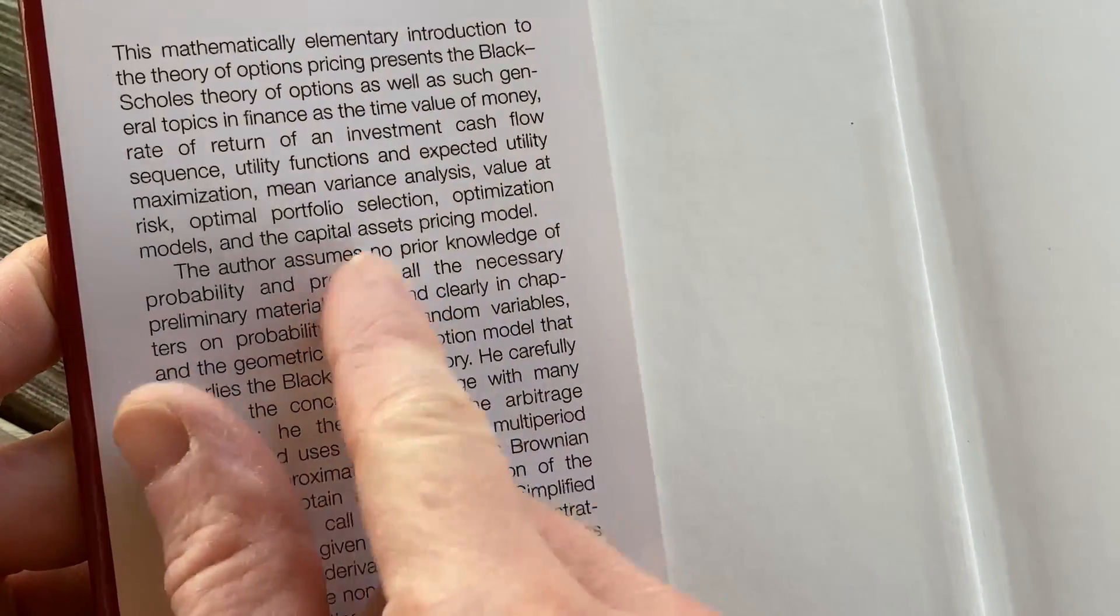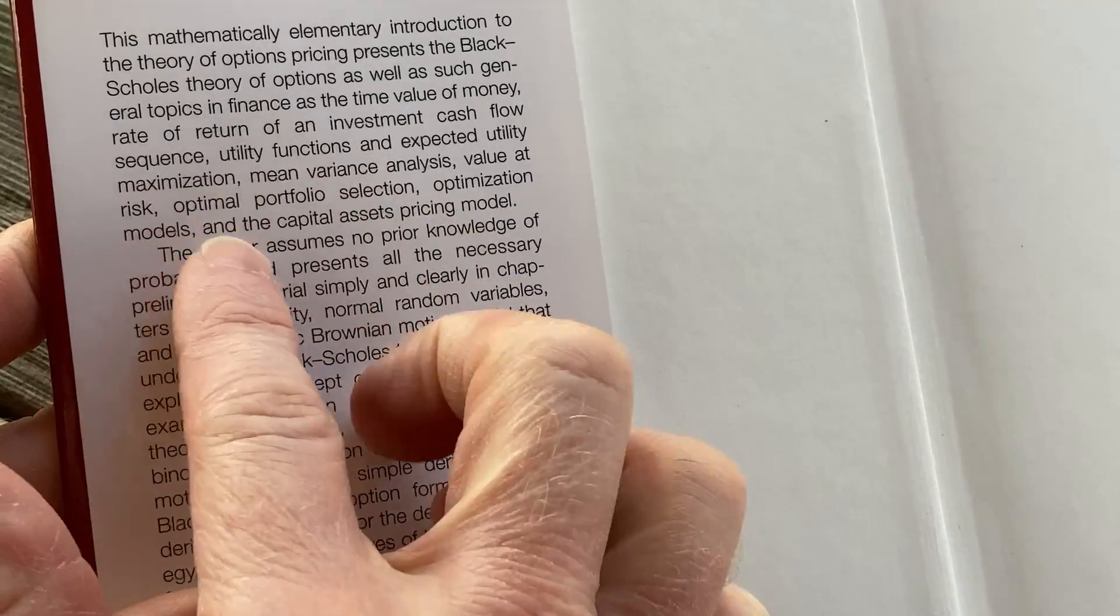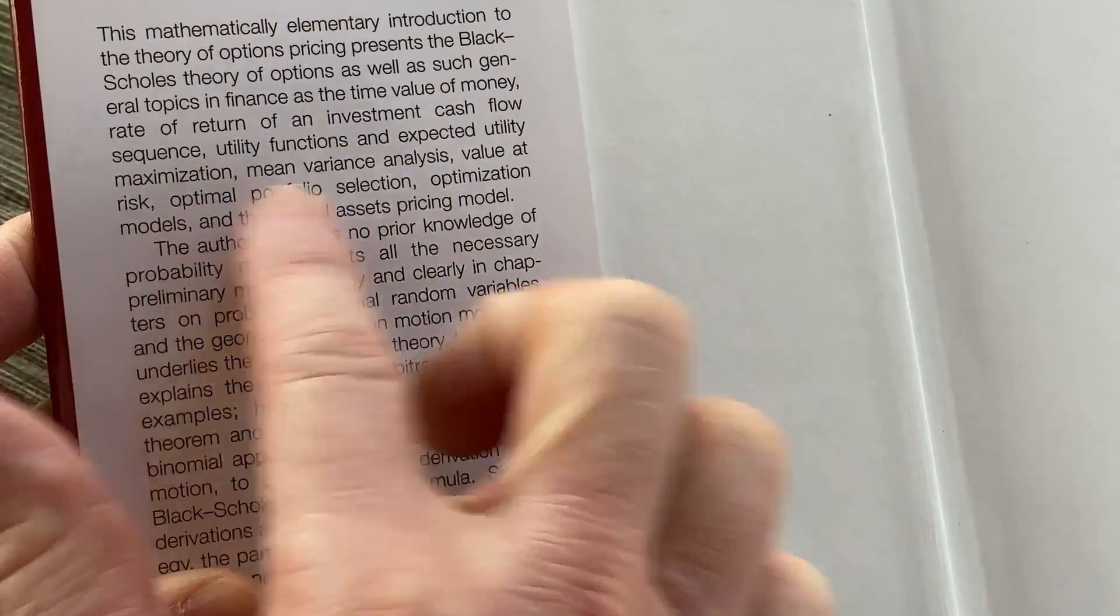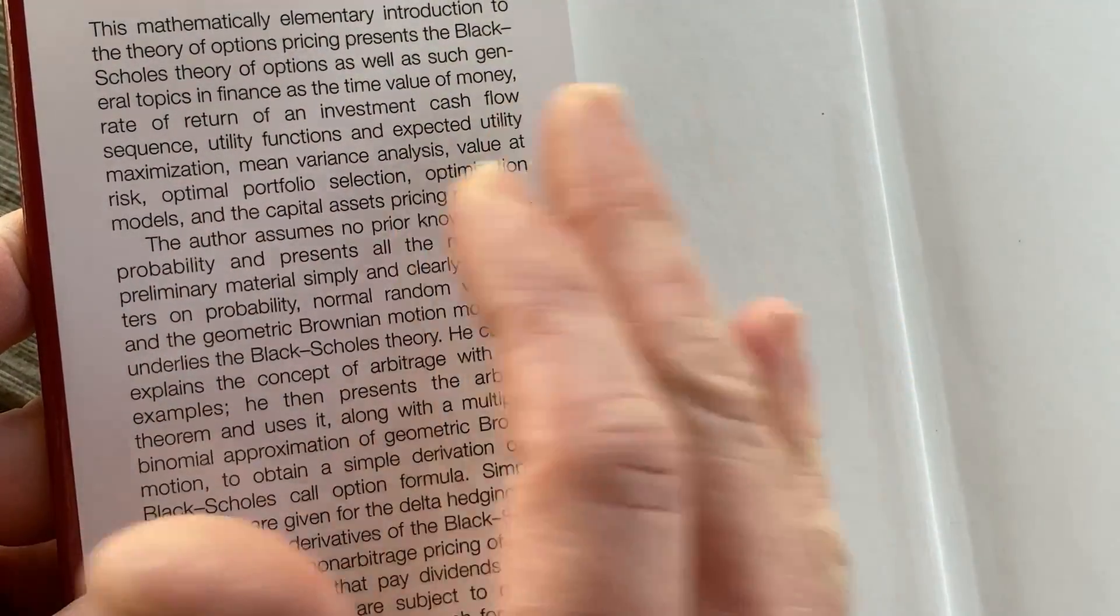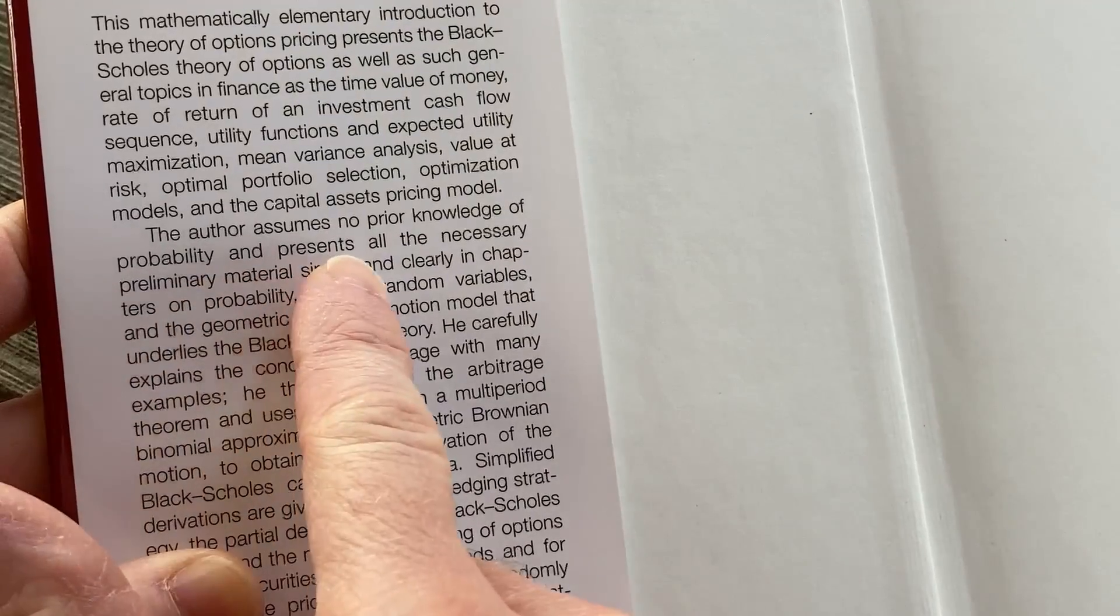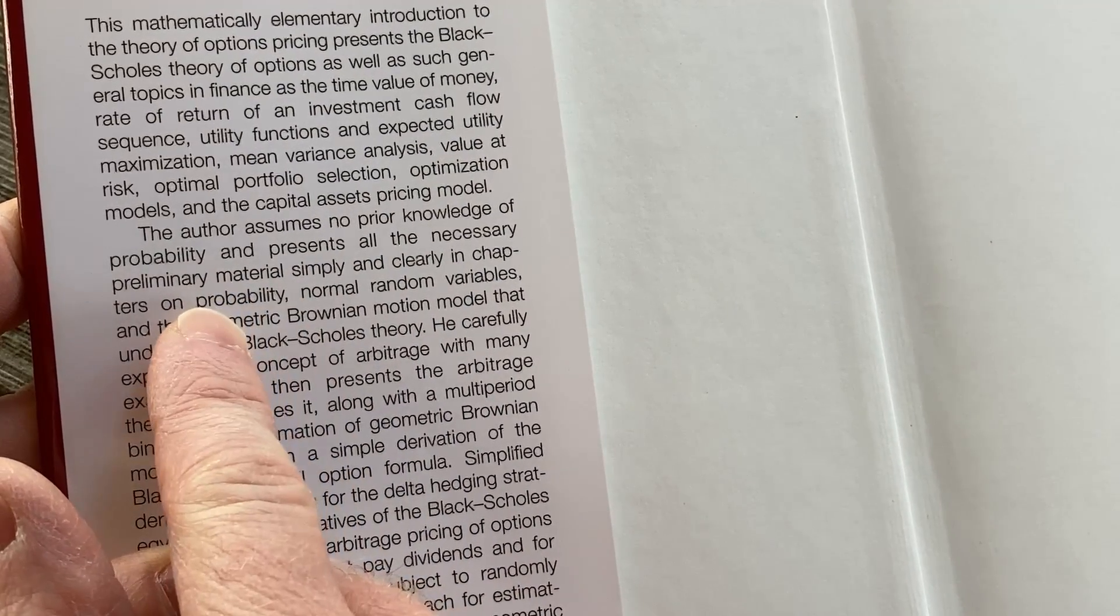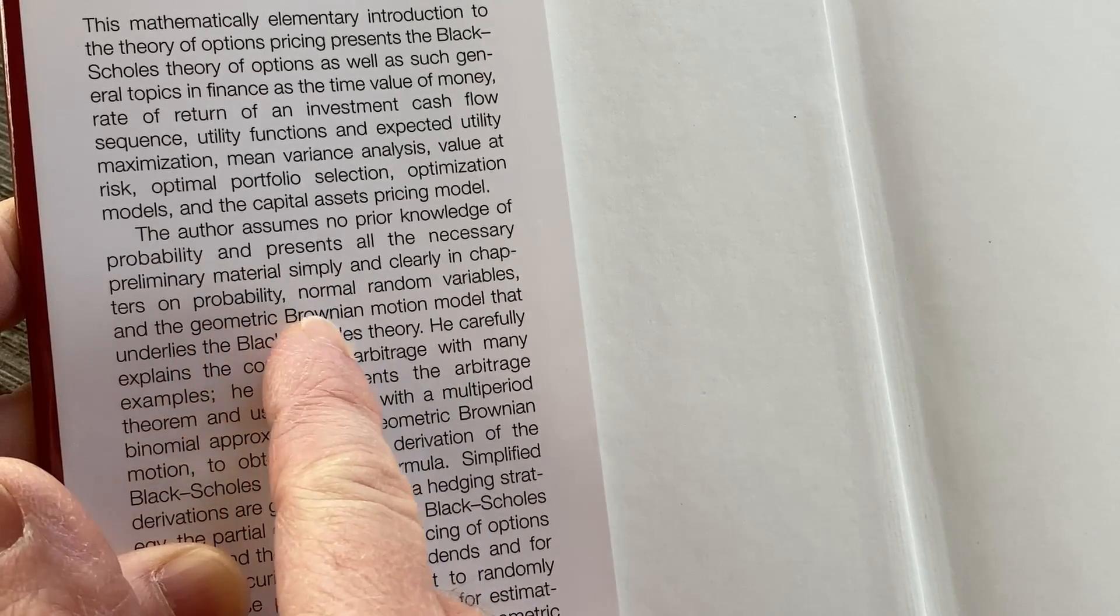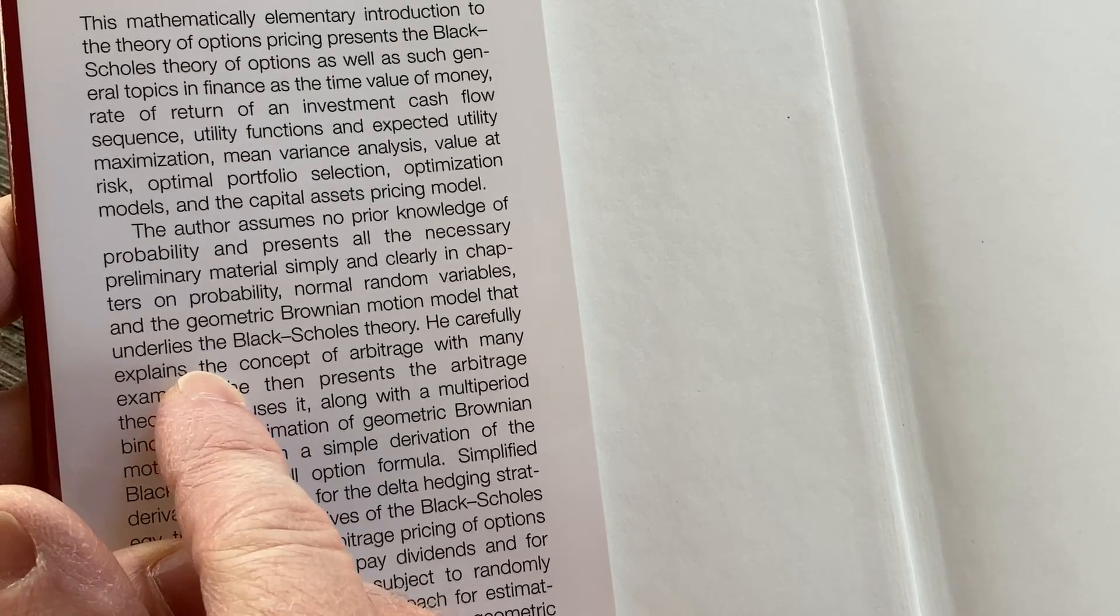So some of these things appear in certain brokerage firms have some of these tools. Not all brokerages have these tools but for example value at risk is something that is calculated for you via software at certain brokerages if you use those. The author assumes no prior knowledge of probability and presents all the necessary preliminary materials simply and clearly in chapters on probability, normal random variables, and the geometric Brownian motion model that underlies the Black-Scholes theory.